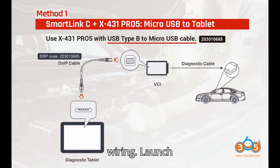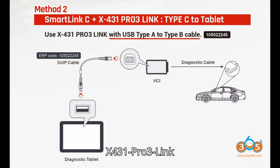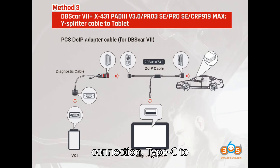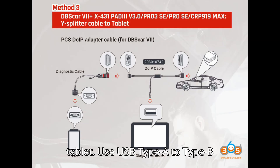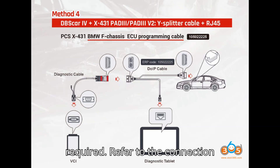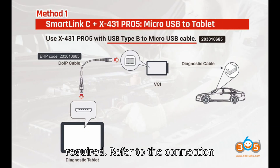Method 2: Launch X431 Pro 3 Link connection. Connection type: Type C to tablet. Use USB Type A to Type B cable. An additional DoIP cable is required. Refer to the connection diagram for setup.